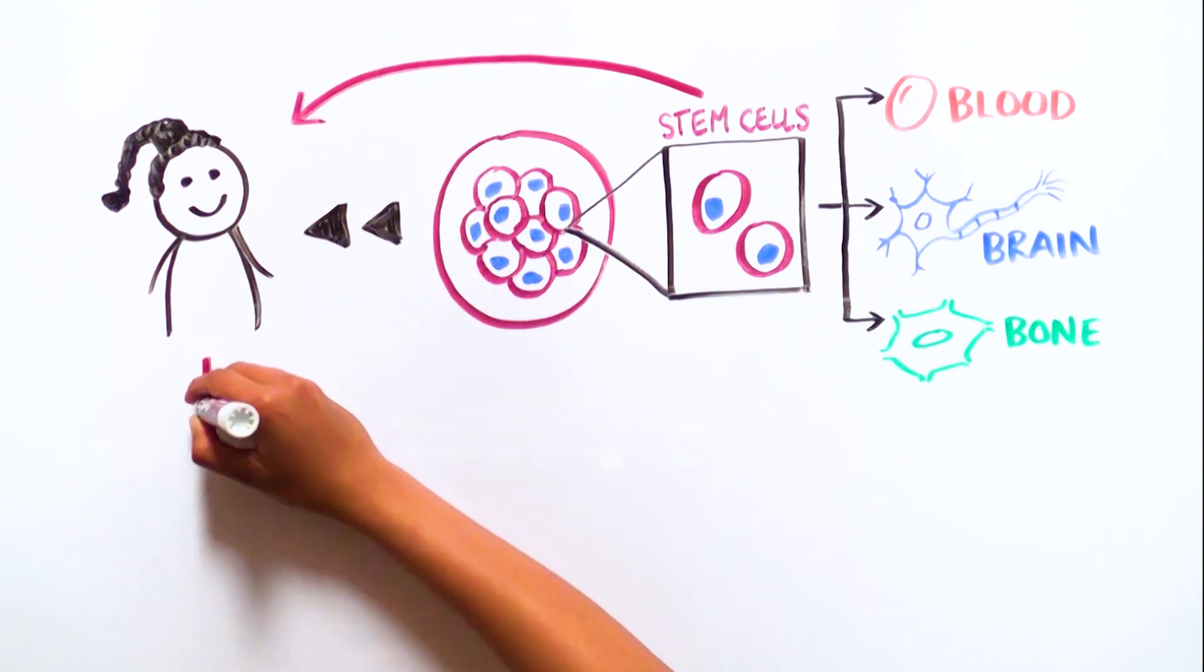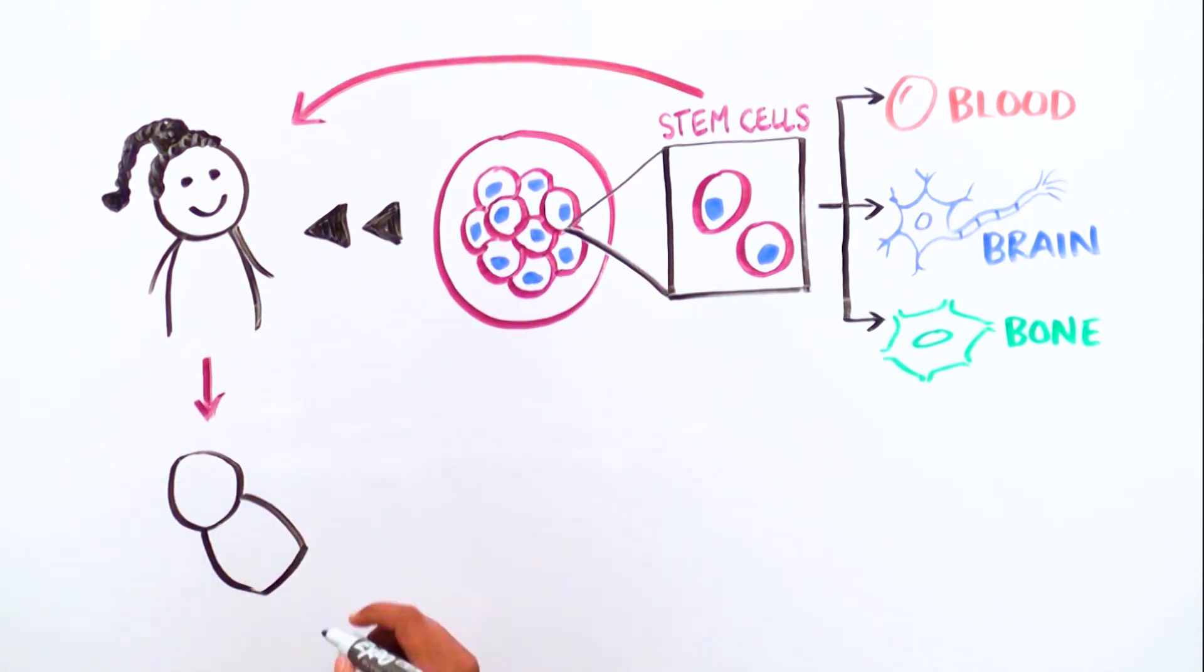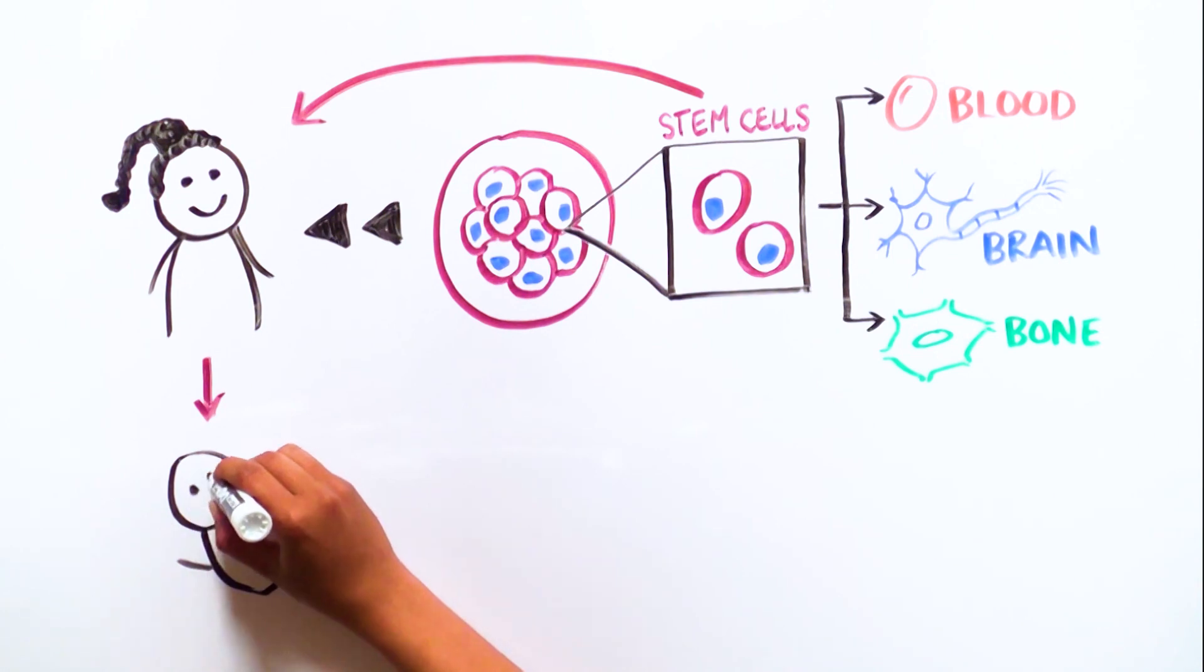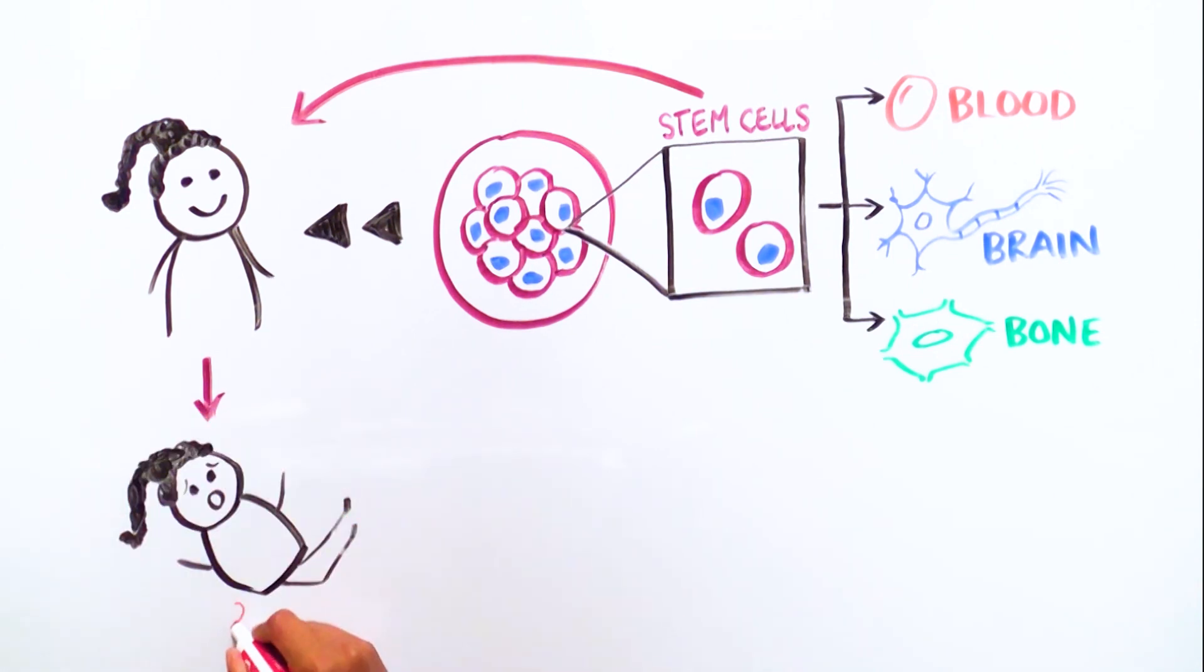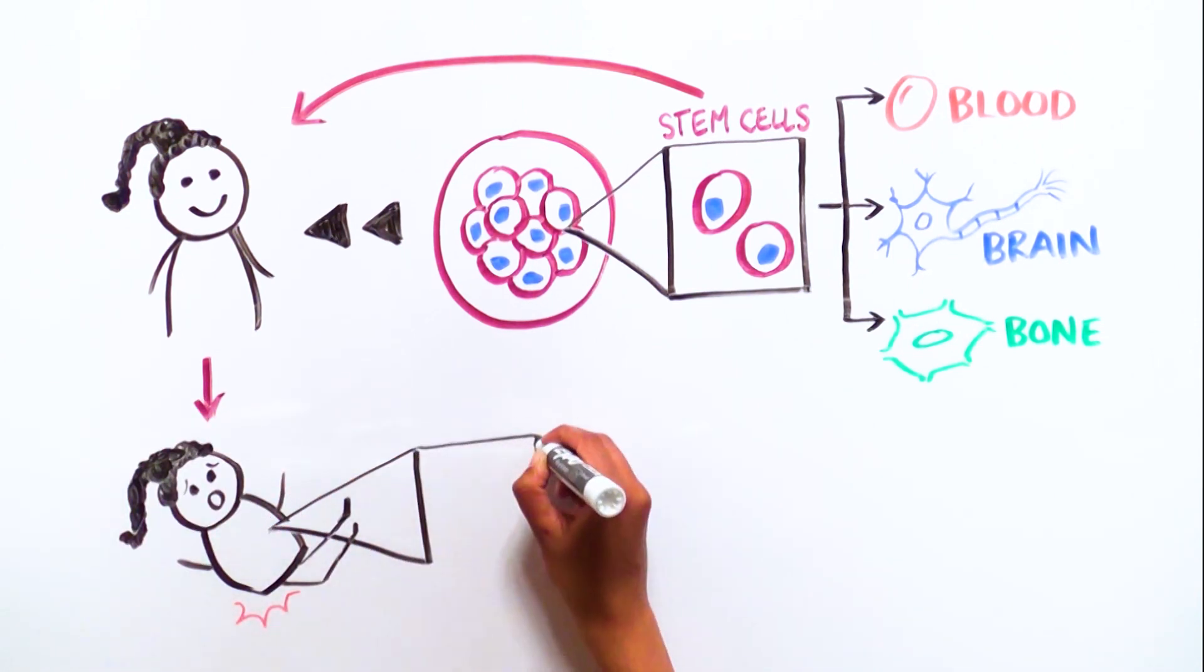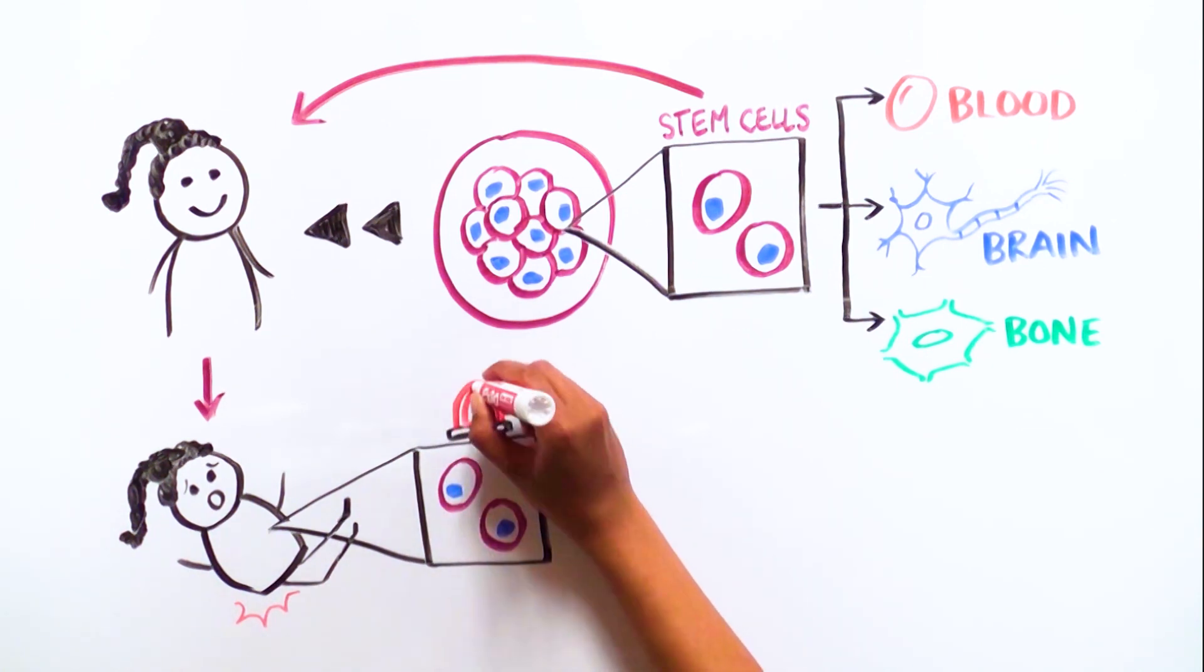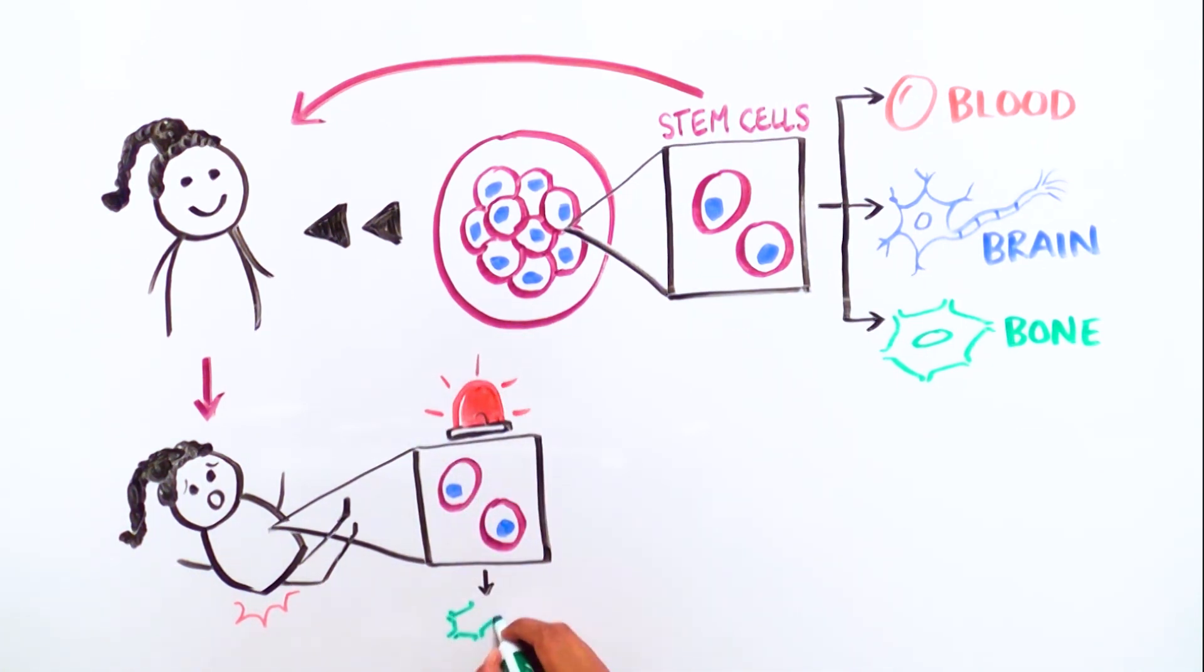Researchers used to think stem cells only occurred during early embryonic development. We now know that stem cells stick around throughout our lives, acting like emergency personnel. When we are injured, sick, or undergo normal wear and tear, stem cells multiply and transform themselves into the lost or dying cells.